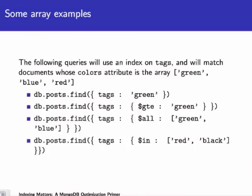For array indexing examples: if a tags attribute contains green, blue, and red, we can do a standard query for posts where tags contains the string green, a range query where tags has a string greater than or equal to green, use the $all operator to find posts having both green and blue tags, and use $in to find posts with either red or black. All of these queries work on both standard attributes and indexed array attributes.